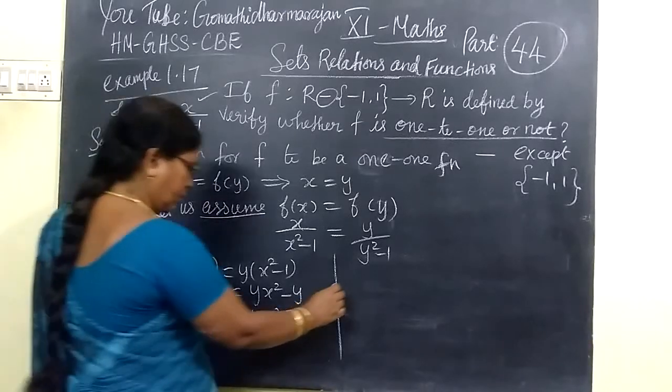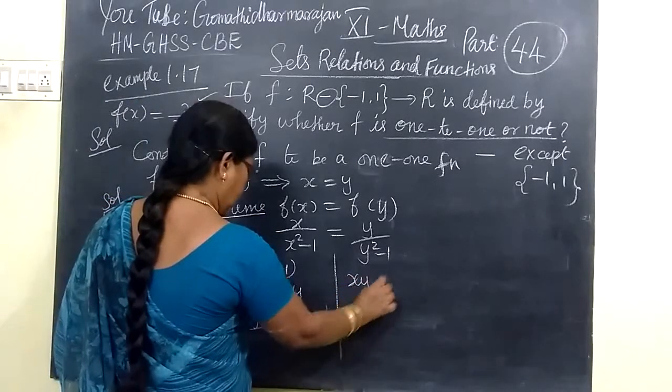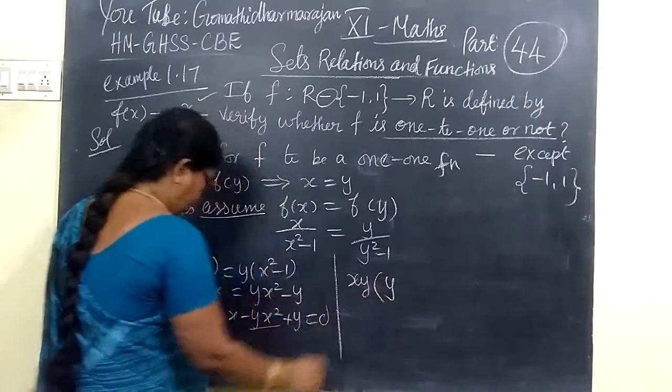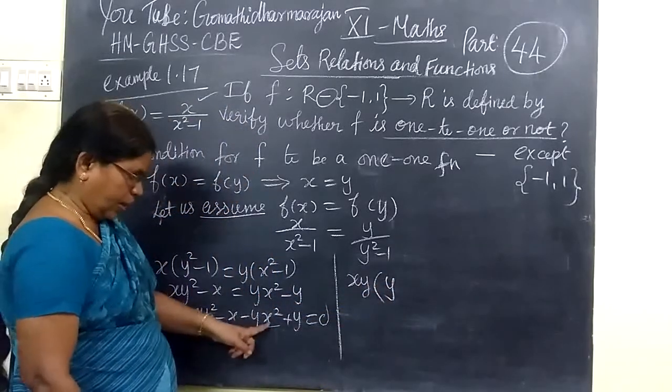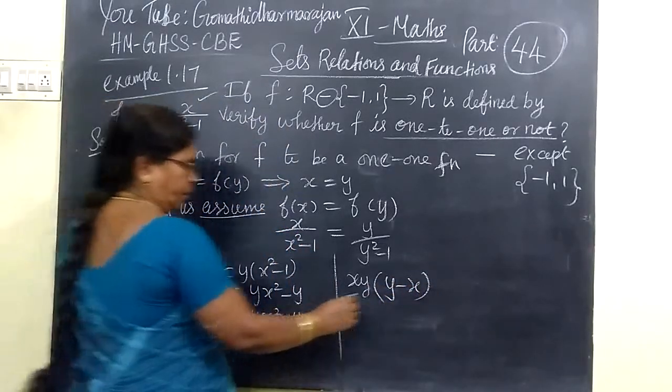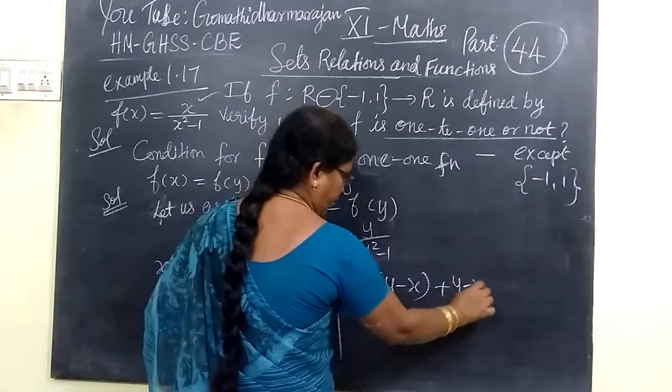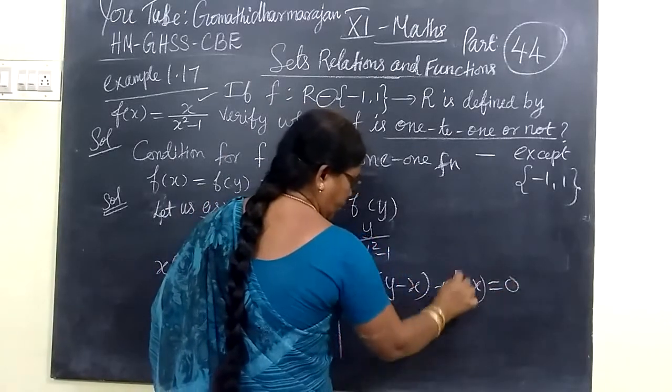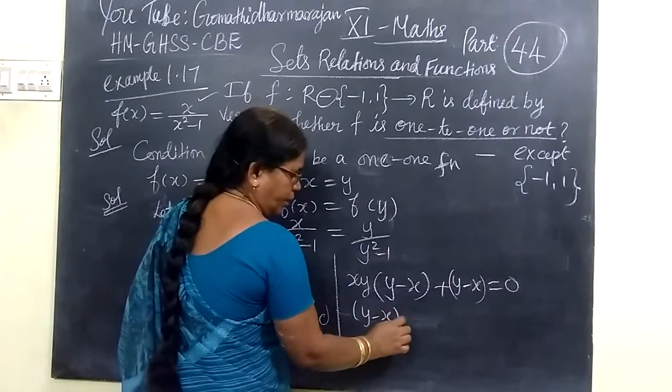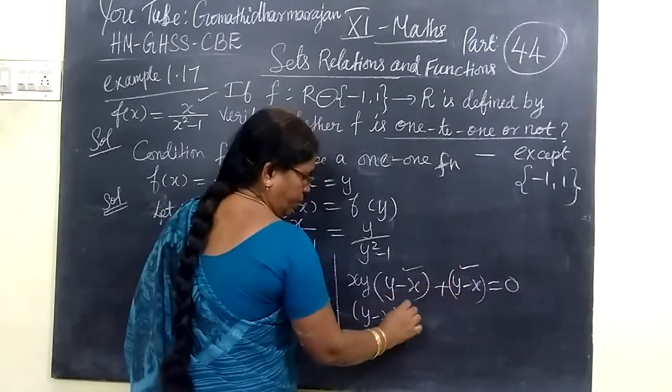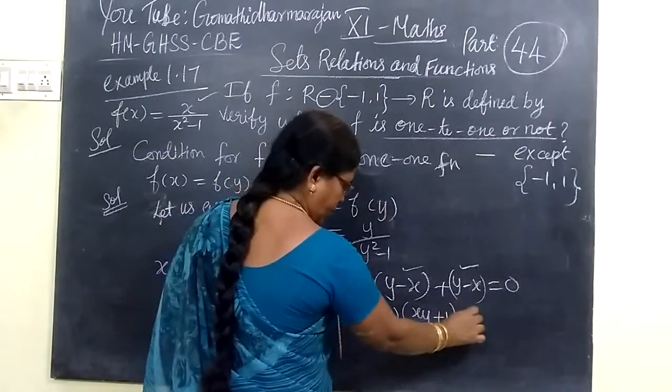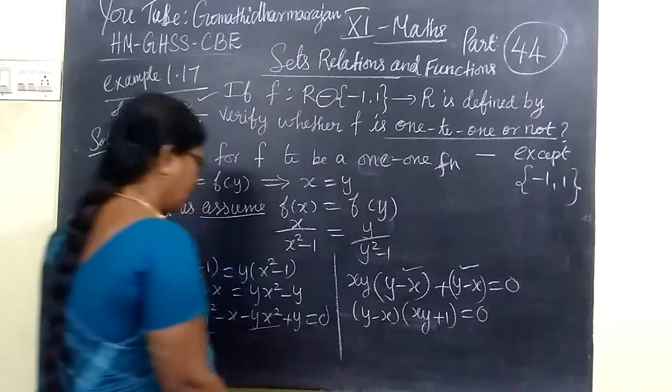So you take xy common. Then it will be x₁x₂(x₂-x₁) plus (x₂-x₁) equals 0. Taking (x₂-x₁) common: (x₂-x₁)(x₁x₂+1) equals 0.